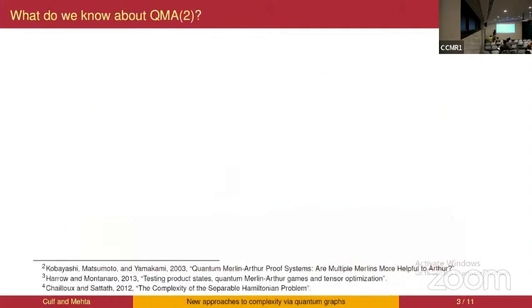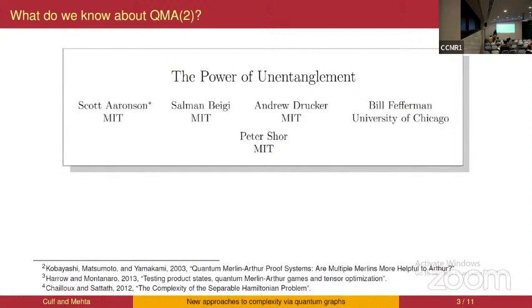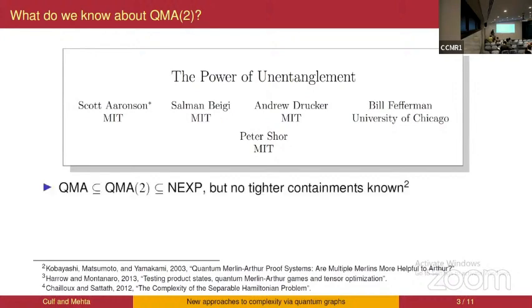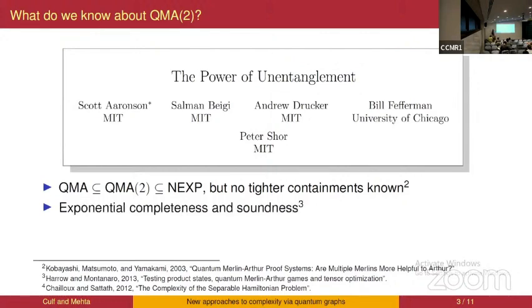QMA2 was introduced partly to give some idea of the power of unentanglement — how much extra knowledge do you gain if you know there is no entanglement at a certain point in a state. In terms of complexity theory, not too much is known about the relationship of QMA2 and its neighboring classes. In particular, it's known to contain QMA and to be contained in NEXP, but no tighter containments are known.